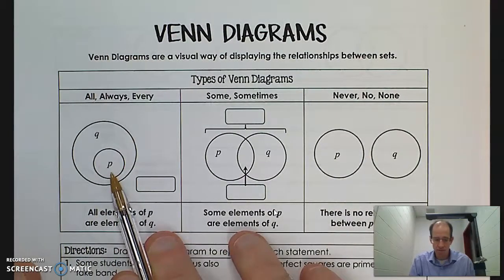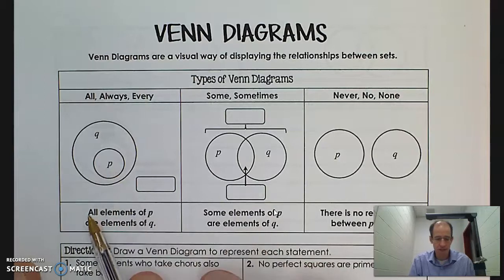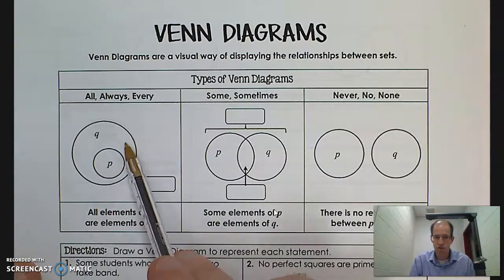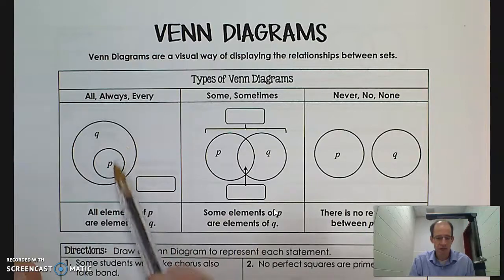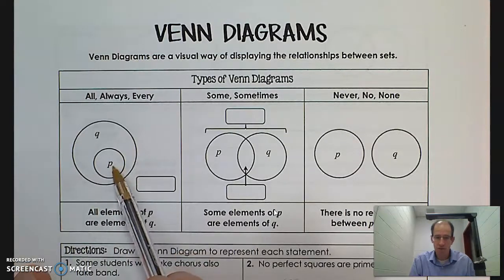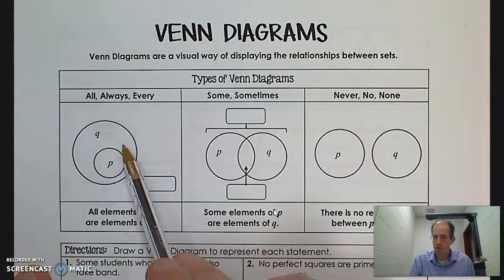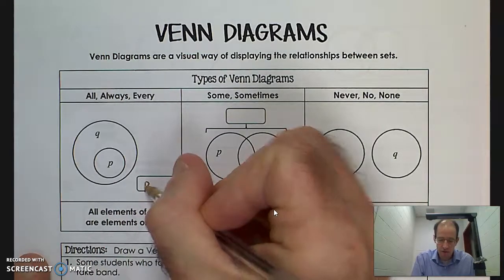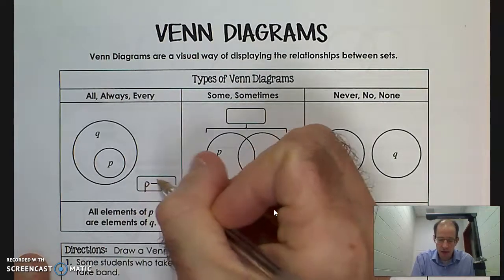What does this mean? In this picture, it means that all elements of P are elements of Q. If I'm standing in circle P, I'm necessarily also standing within circle Q. So if I'm a member of P, I have to be a member of Q. So if I'm in P, then I'm in Q. I'm using if and then, and we know that indicates a conditional statement — P arrow Q. If I'm in P, then I'm in Q. If the hypothesis, then the conclusion.